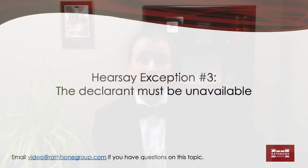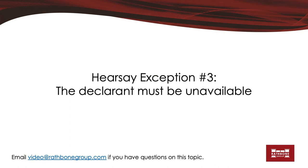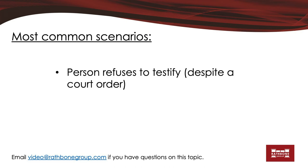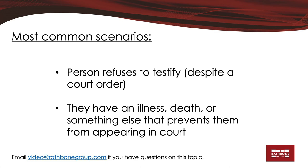There's a third category that we're going to talk about in today's video where the declarant — the person who made the statement — must be unavailable. Under the federal rules, a witness is unavailable in a number of scenarios; most commonly if the person refuses to testify despite a court order, or they have an illness or death or something else that prevents them from appearing in court and testifying.